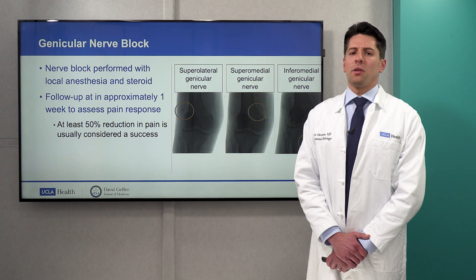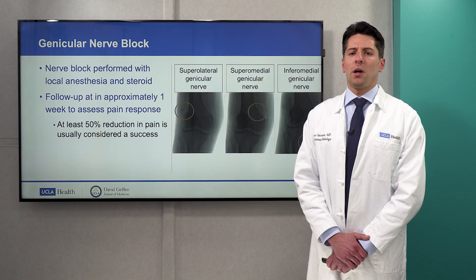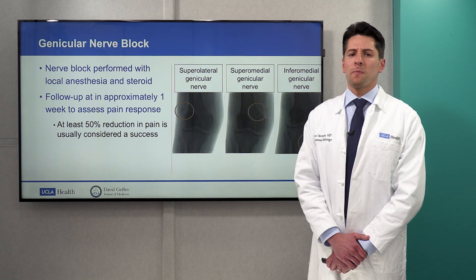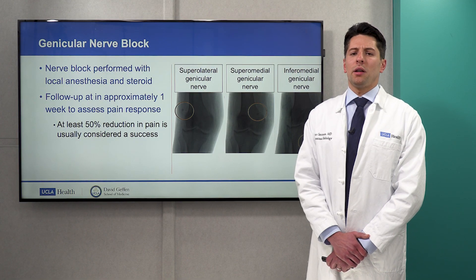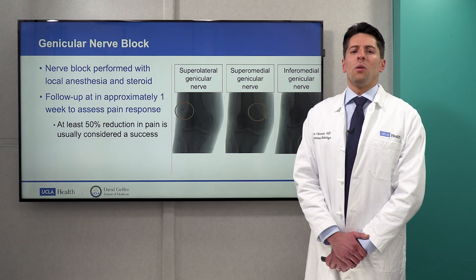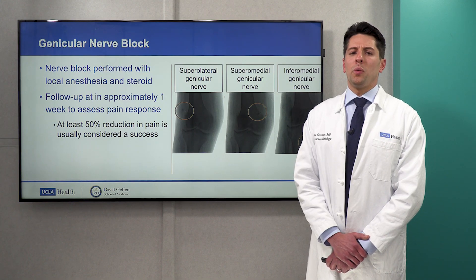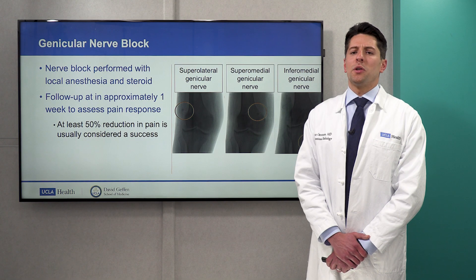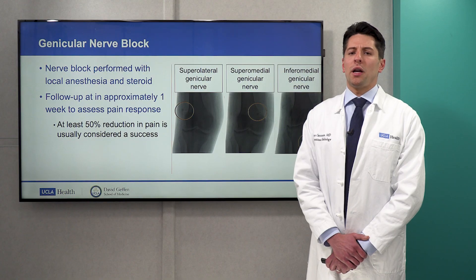Prior to bringing patients for geniculate nerve ablation we first perform a nerve block. During the nerve block we place small needles in the region of each of our geniculate nerve targets and typically inject a local anesthetic and steroid. We have a follow-up visit approximately one week after the nerve block to assess your pain response. If there is at least a 50% reduction in your knee pain following the nerve block, we will then schedule you for your geniculate nerve ablation.